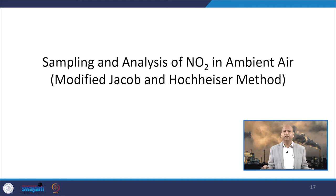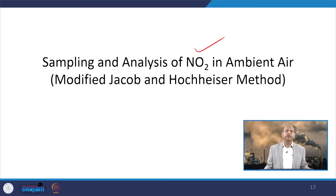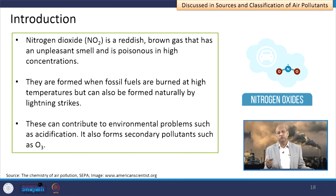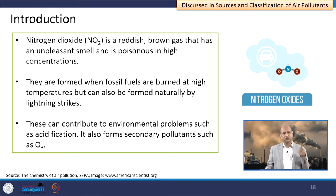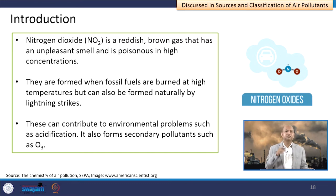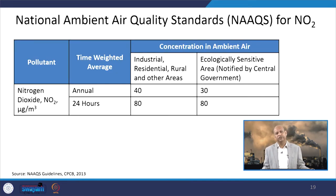Similarly, the sampling and analysis is done for NO2 — nitrogen dioxide — in ambient air, and the method used is known as the modified Jacob and Hochheiser method. NO2 is known for creating acid rain-related problems, respiratory health effects, contributing to haze and smog formation, and is also a precursor for ozone formation. That is why it is a problematic gaseous component in the air.